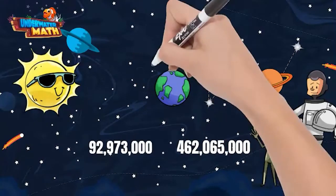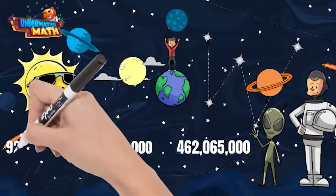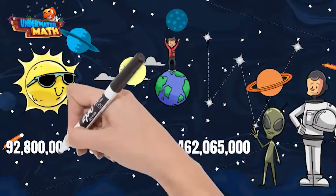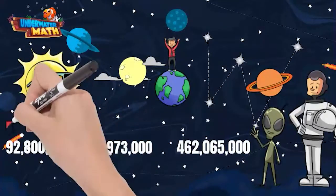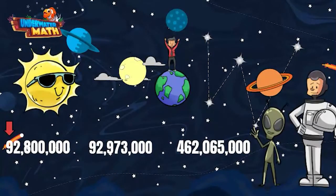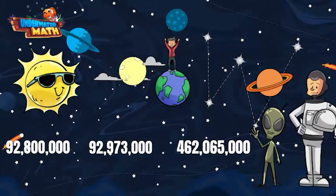What if we add the moon into this problem? The moon is 92,800,000 miles from the Sun. The moon and Earth have similar numbers and we need to look at each digit in order to compare. They both start in the 10 million's place and have the same digit in that place value.